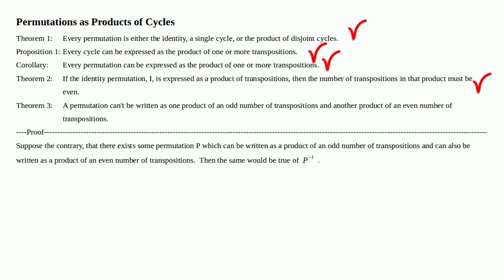Suppose the contrary, so we're doing another proof by contradiction, that there exists some permutation p which can be written as a product of an odd number of transpositions and can also be written as a product of an even number of transpositions. Then the same would be true of p inverse.